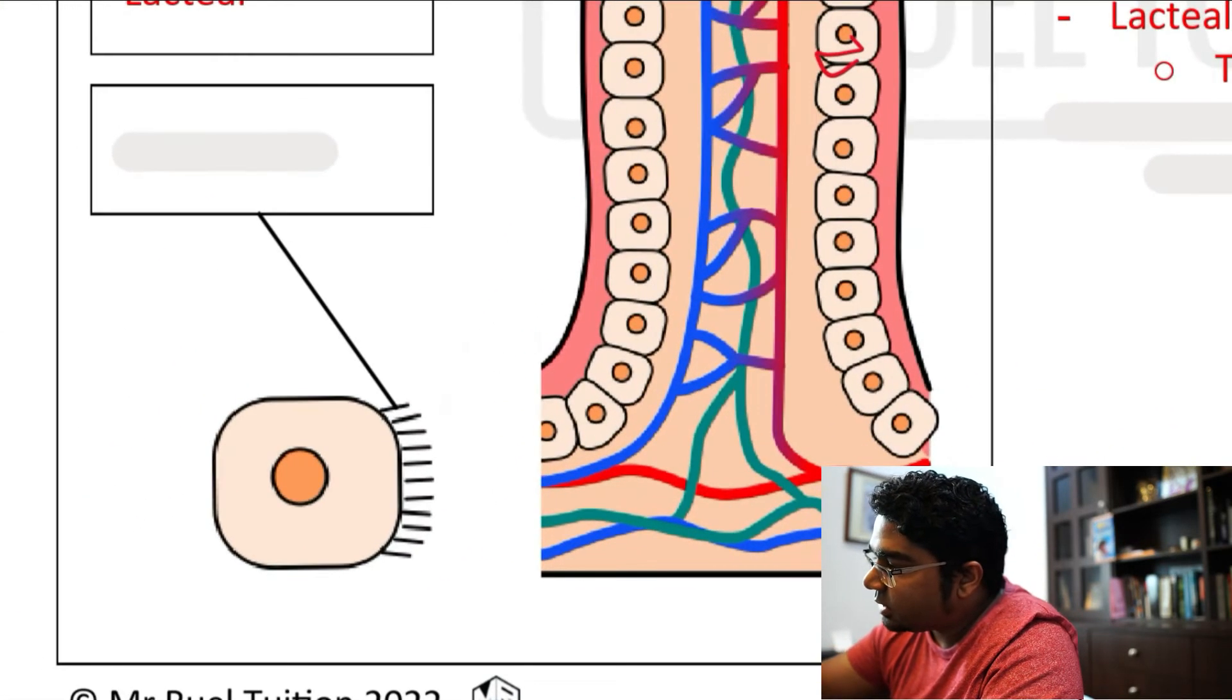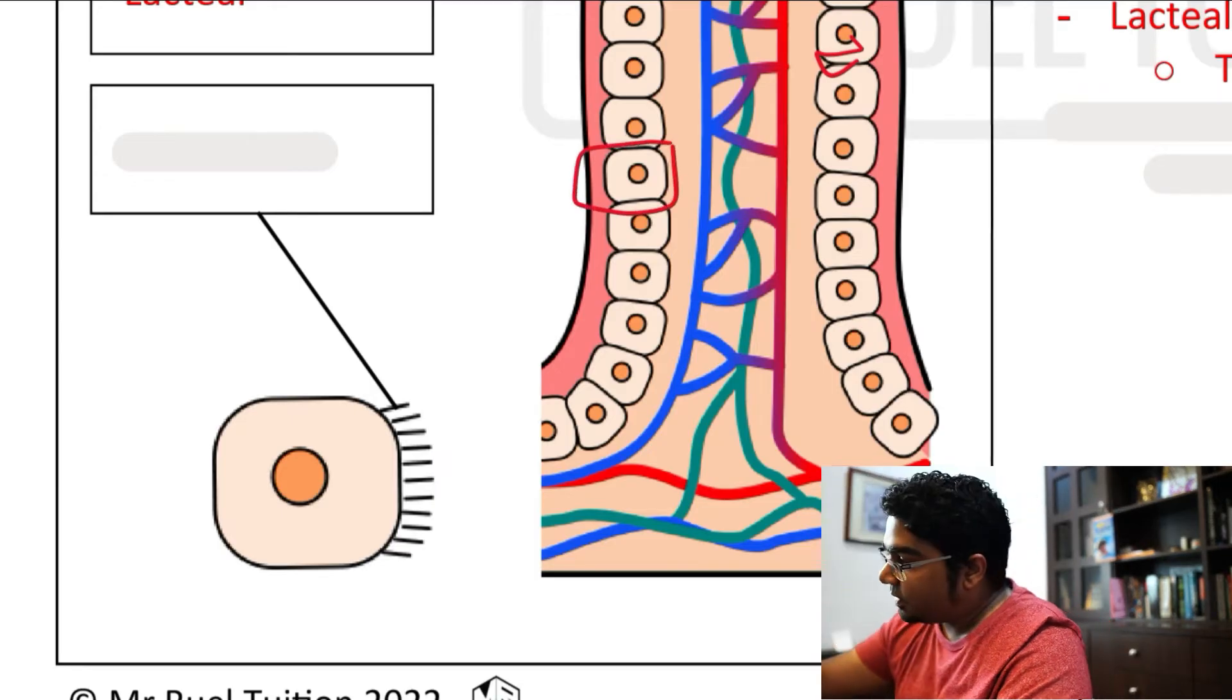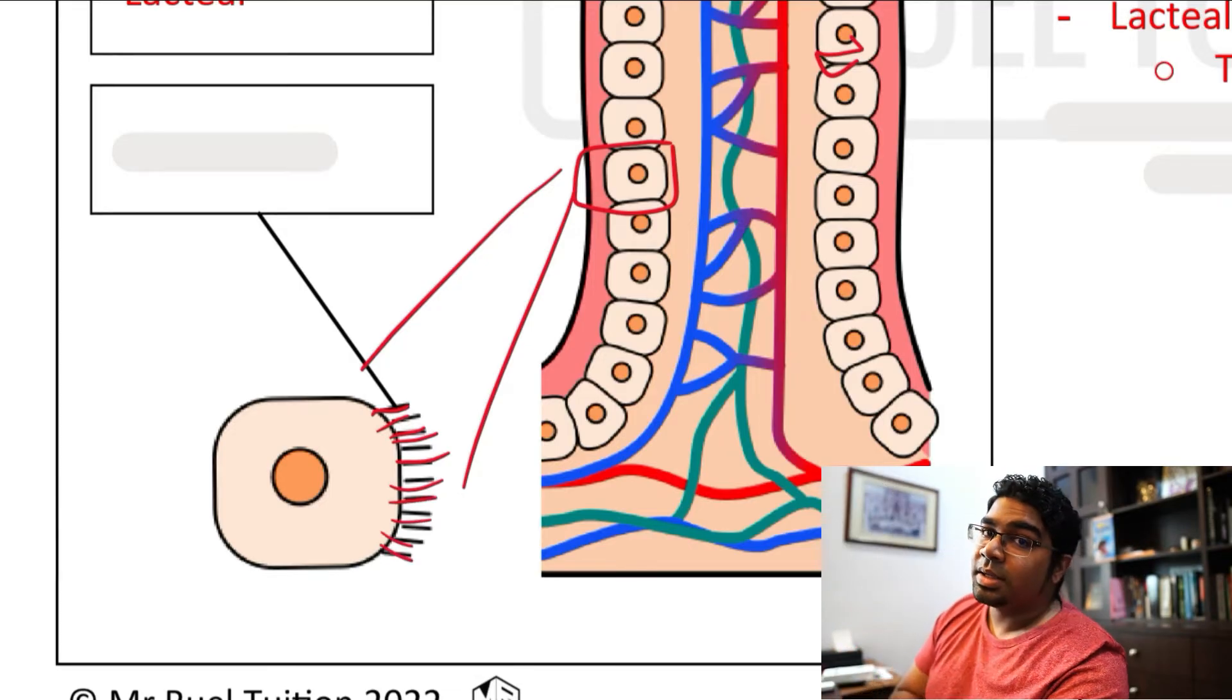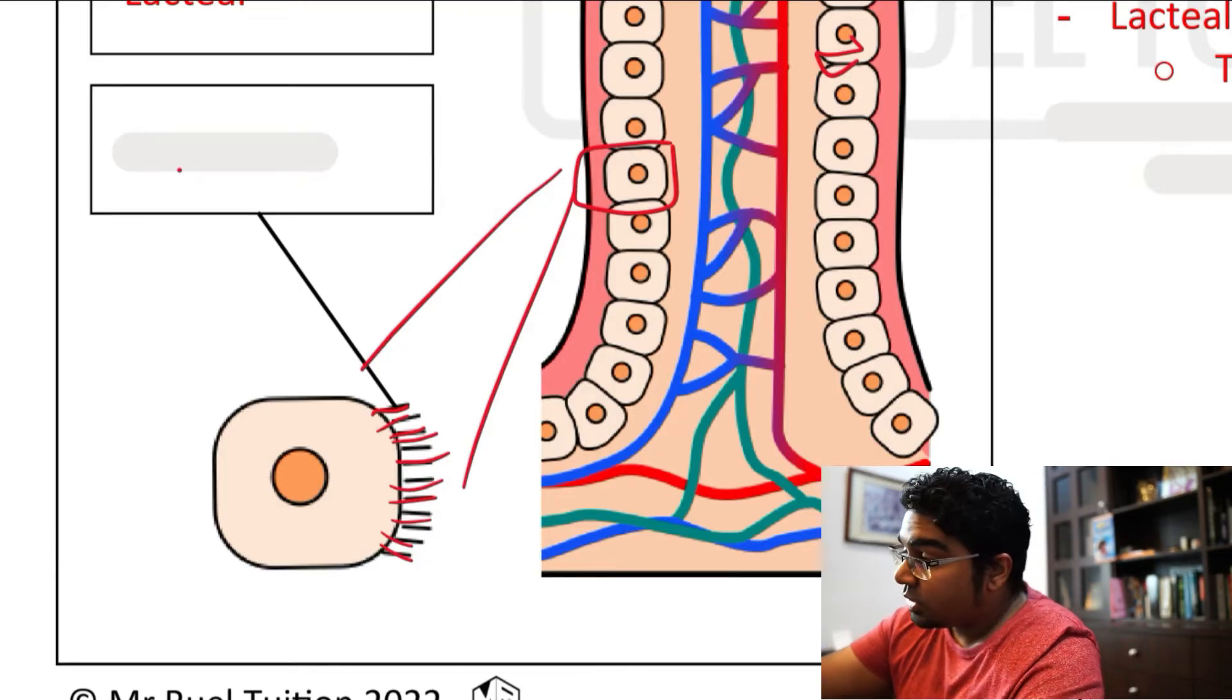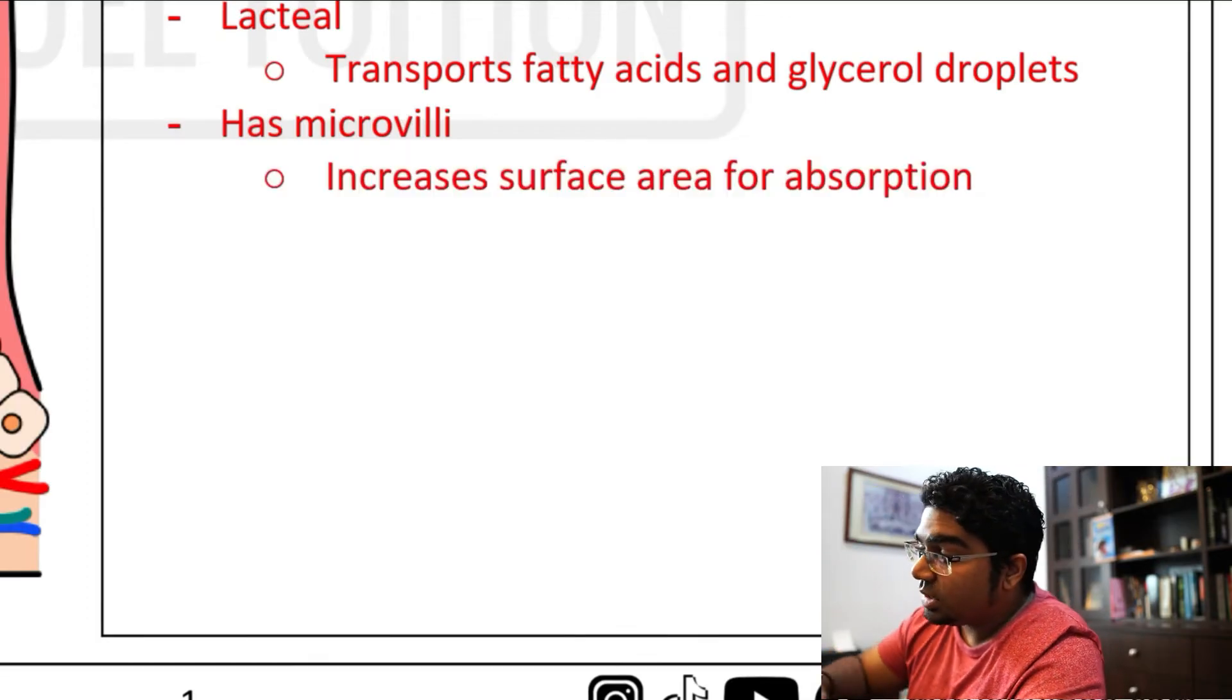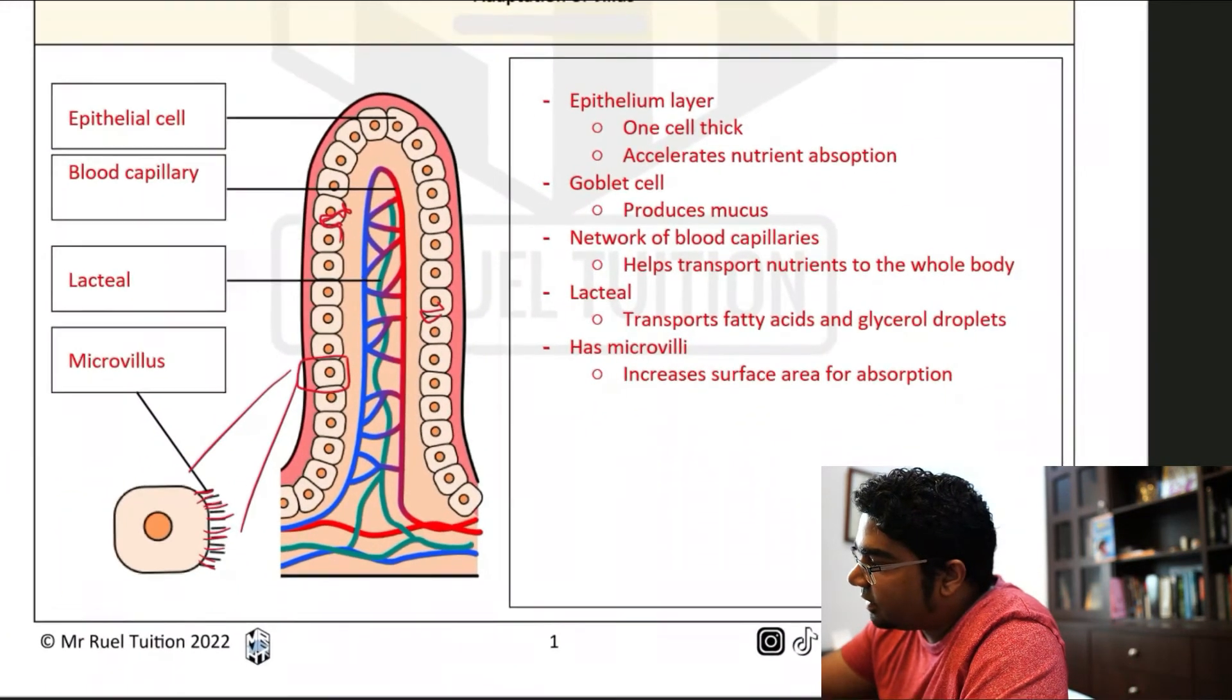And then finally, on each of these epithelial cells, remember villus itself is a projection. But on top of each of these epithelial cells itself, when we zoom it in, these epithelial cells themselves have tiny projections coming out. And so it's just like a micro villus. And that's exactly what it's called. It's the micro villus. So once again, what is the function of the micro villus? The same as just now. Whenever we have any projections in biology, the function is to increase the surface area for absorption, to expose more places for things to pass through.